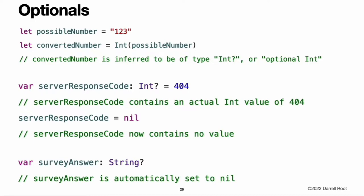For these types, Objective-C methods typically return a special value, such as NSNotFound, to indicate the absence of a value. This approach assumes that the method's caller knows there is a special value to test against and remembers to check for it. Swift's optionals let you indicate the absence of a value for any type at all, without a need for special constants.